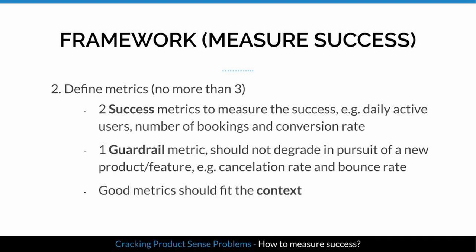Once you have a clear understanding, define the metrics to measure it. I recommend providing no more than three metrics: two success metrics to measure the effectiveness of the product — commonly used ones include daily active users, number of bookings, and conversion rate — and one guardrail metric, which is a metric that should not degrade in pursuit of a new product or feature, such as cancellation rate or bounce rate. Good metrics should also fit the context.